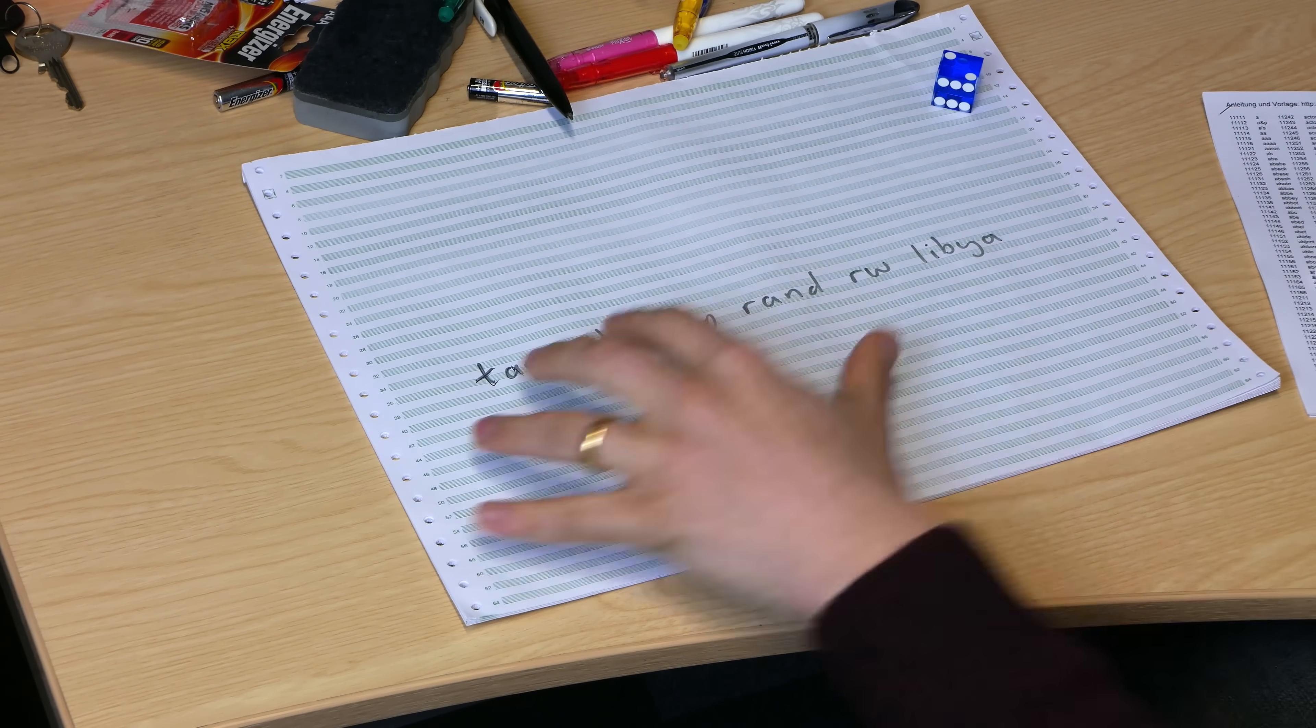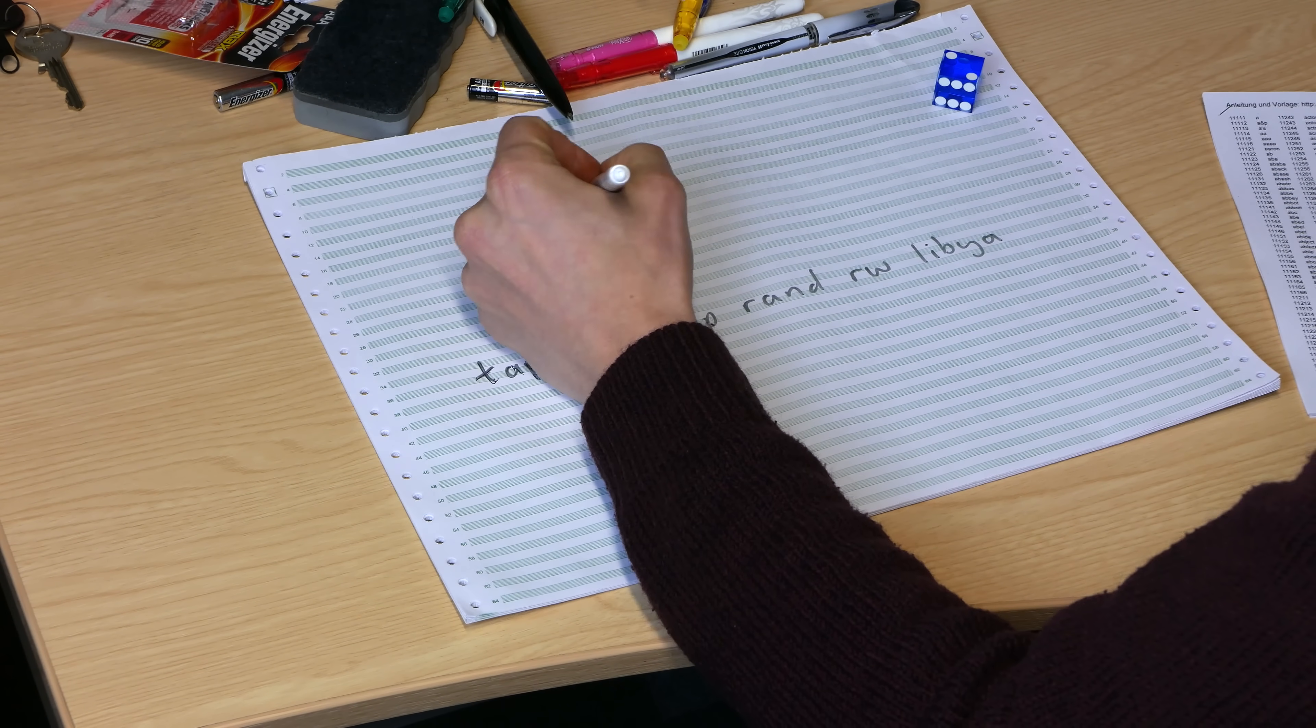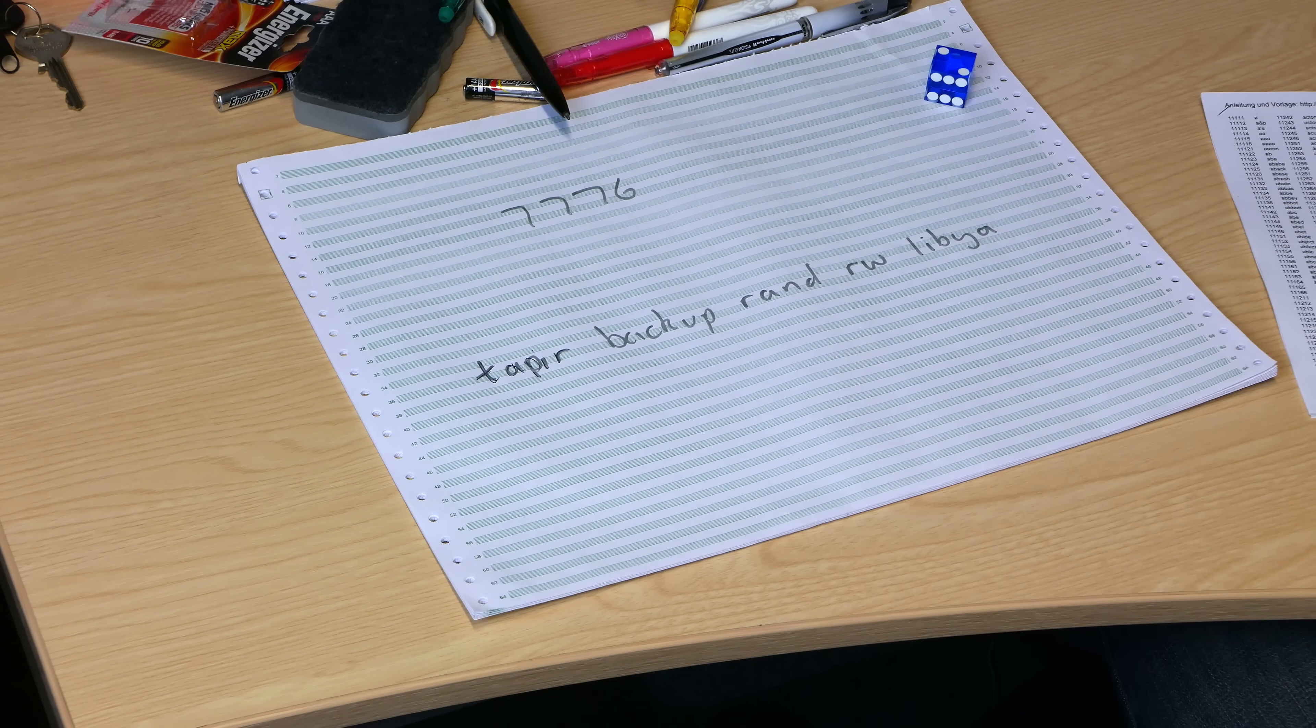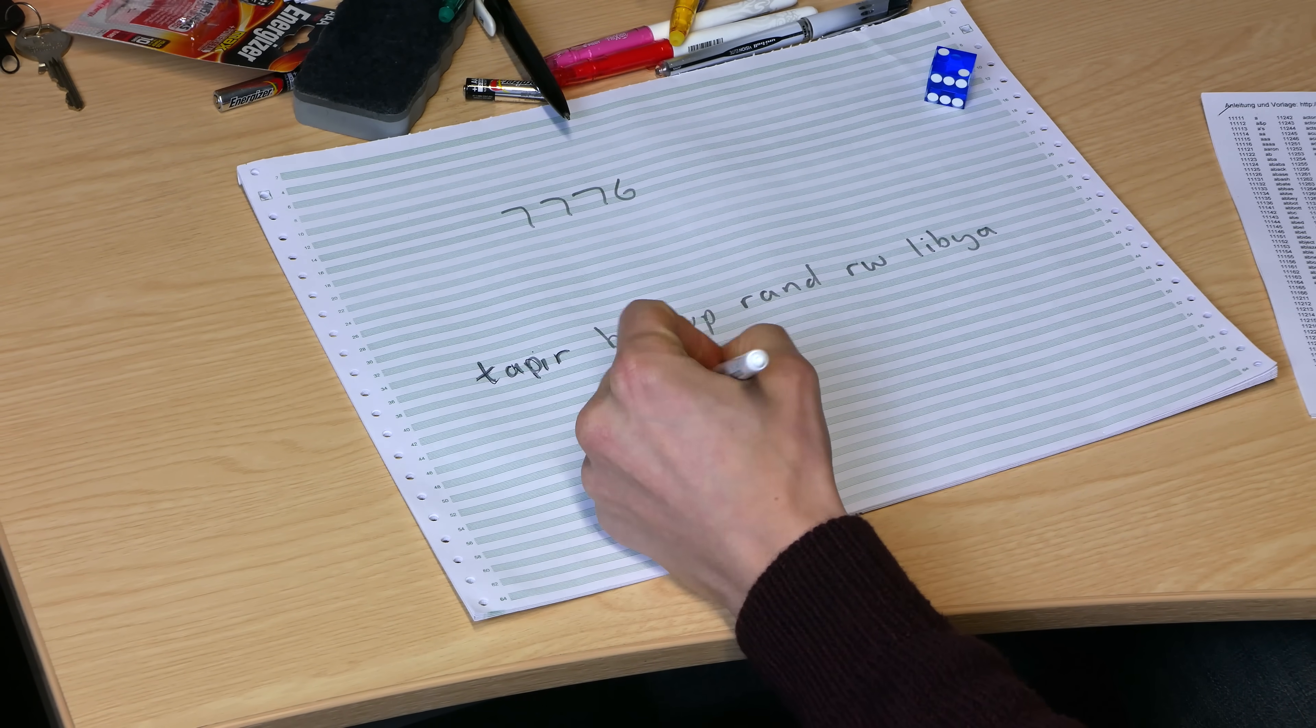So what is the strength of this password? Well, each of these words has come from 7,776. So we can assume that the attacker knows that I'm using this password scheme. So they know my password is 5 words separated by spaces, which adds nothing, because they know what the spaces are, out of a possible 7,776. So the strength of this password is actually 7,776 to the 5.